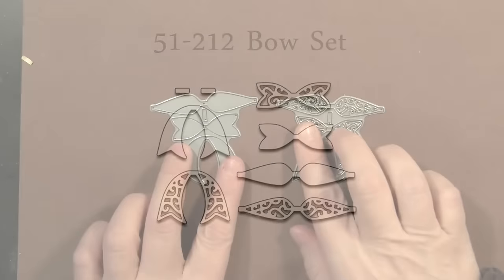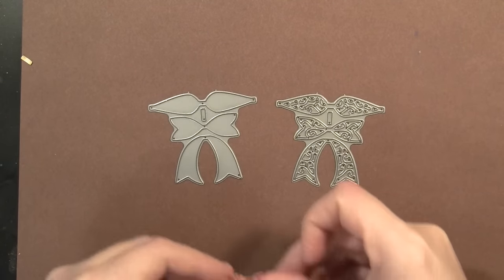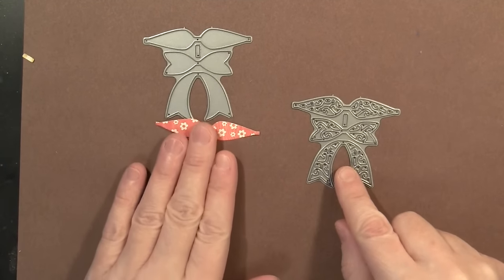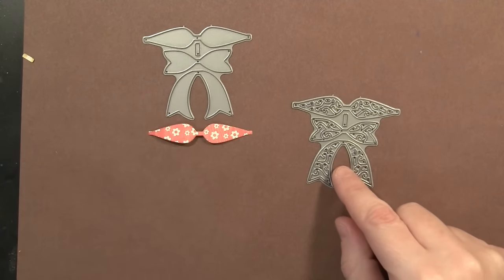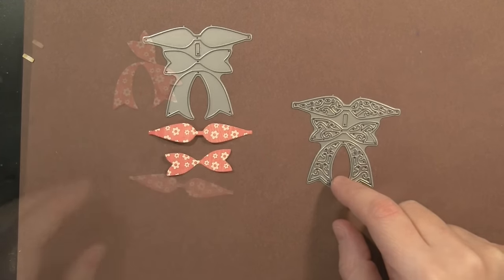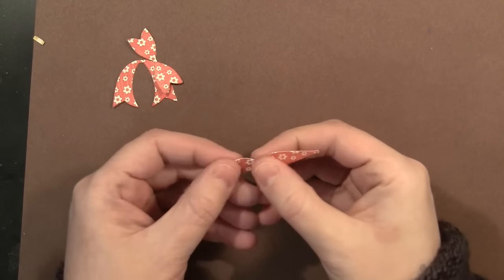Now the final 3D set here is our bow set. And you get a solid bow die cut. And then you also get this beautiful intricate lacy one.